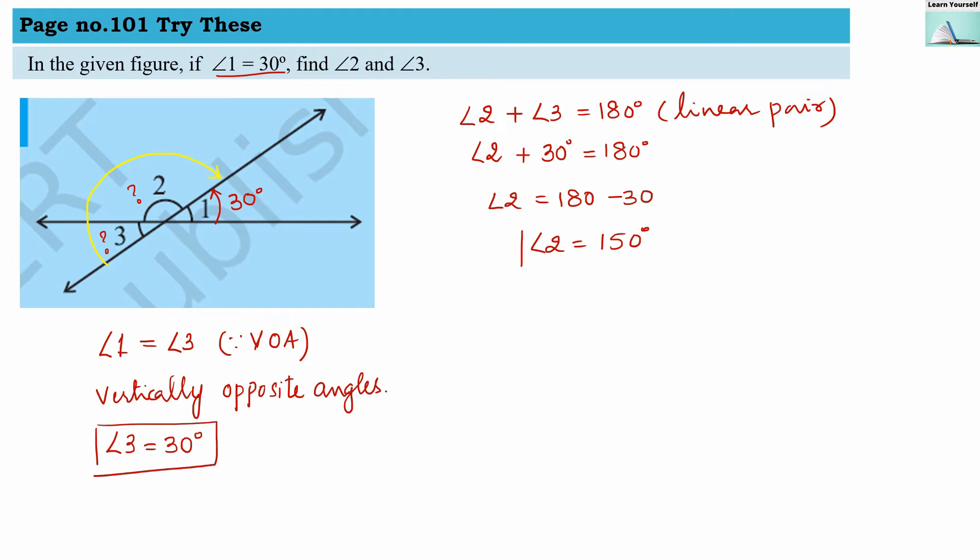So here we got the answer for both the angles: angle 3 is 30 degrees, angle 2 is 150 degrees. And similarly, if angle 4 is also there, then angle 2 and angle 4 are also vertically opposite angles, so the measure of these two angles will also be equal. They have not asked for it, but if they have asked, then we can write angle 4's measure is 150 degrees.